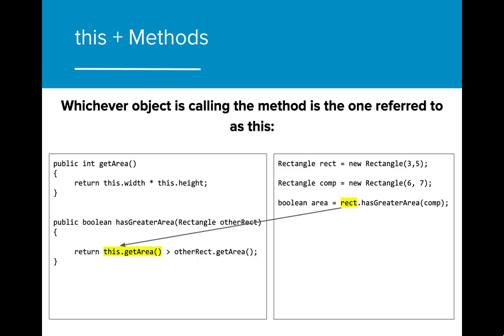In practice, whichever object is calling the method or constructor is the one that is being referred to when this is called. In this example, when rect.hasGreaterArea is called, this.getArea is using the attributes of rect when calculating the area.